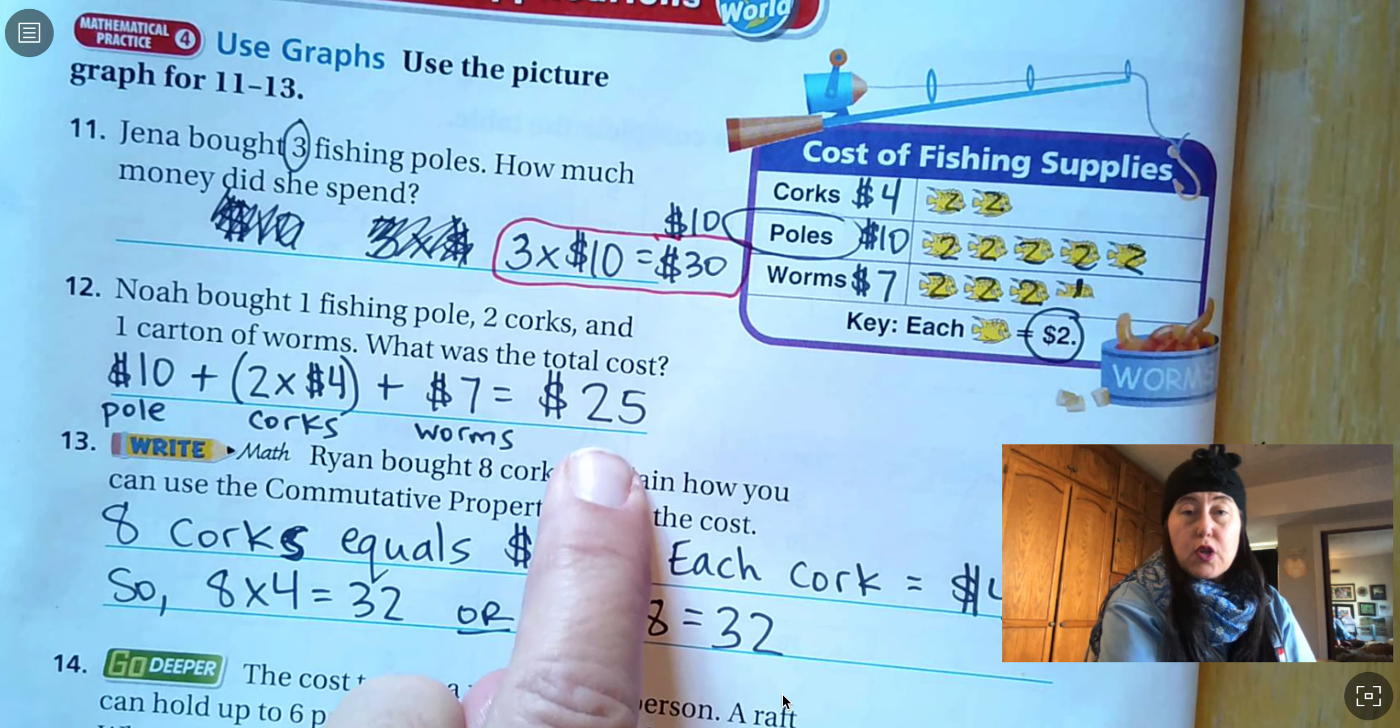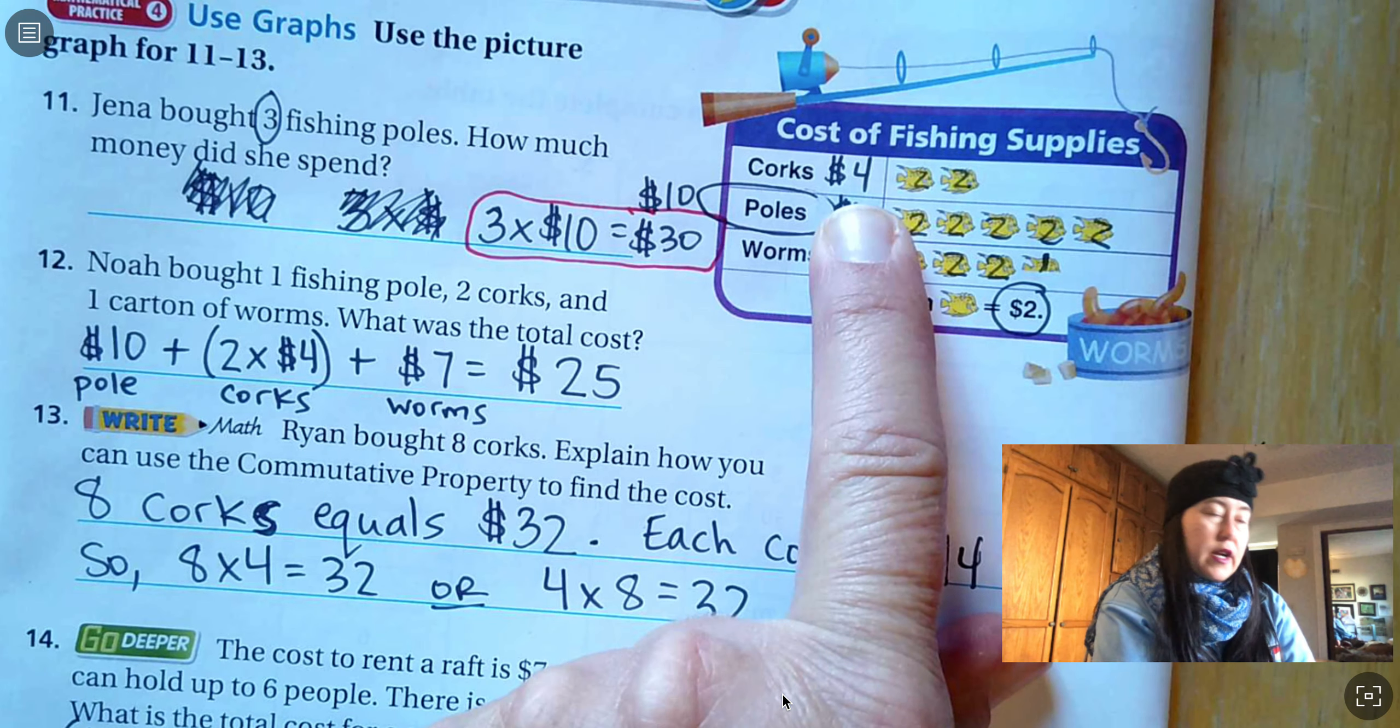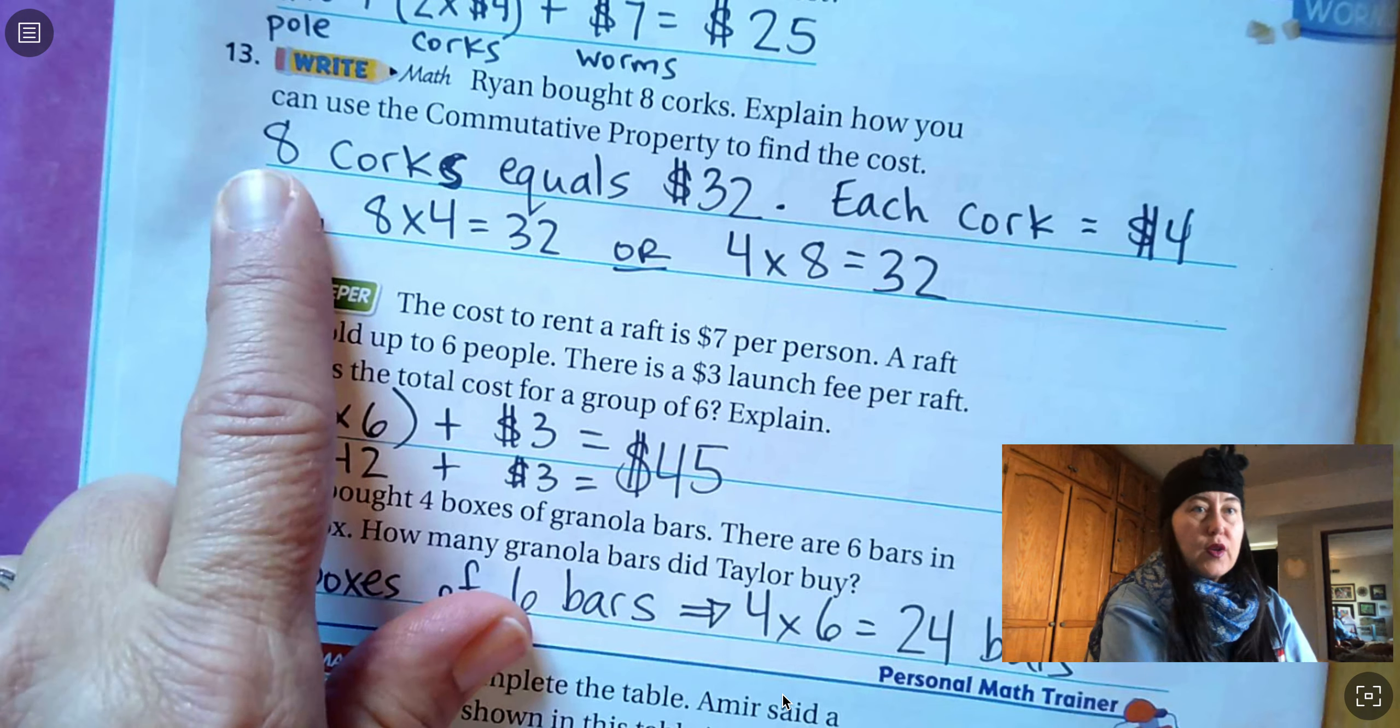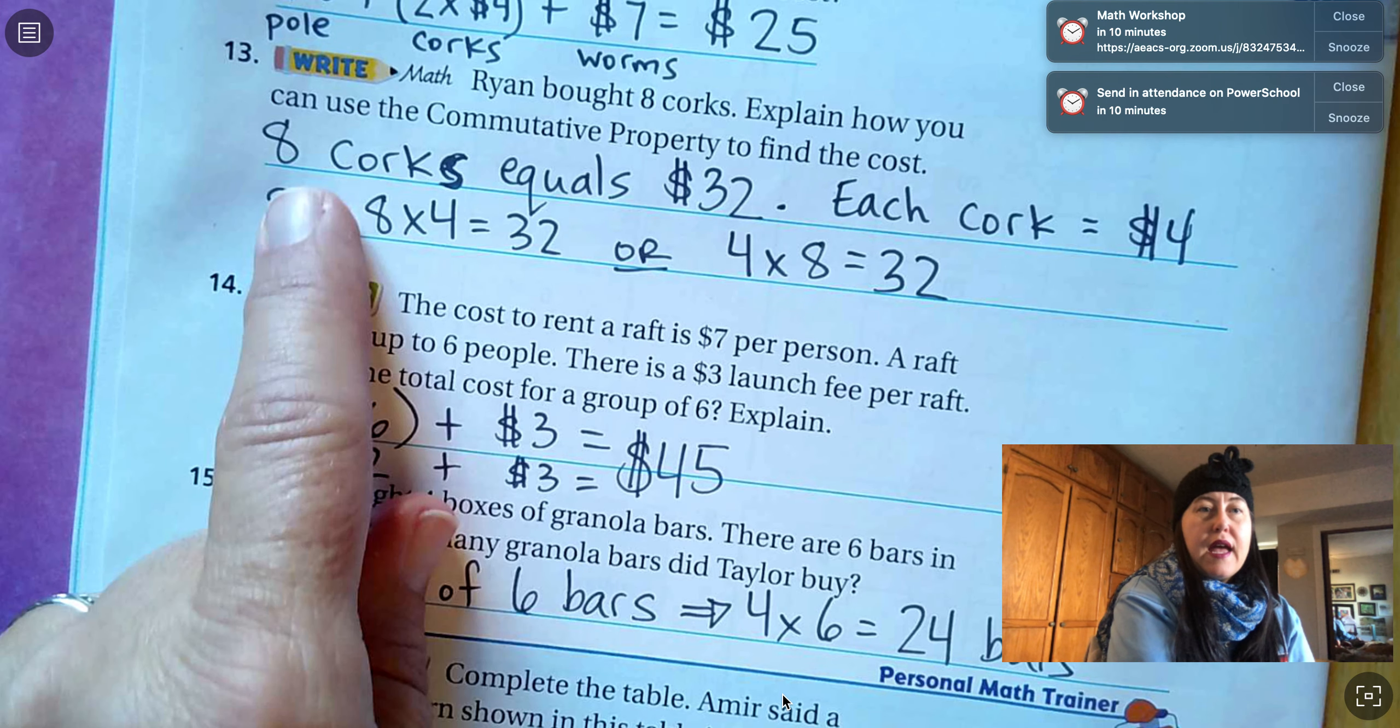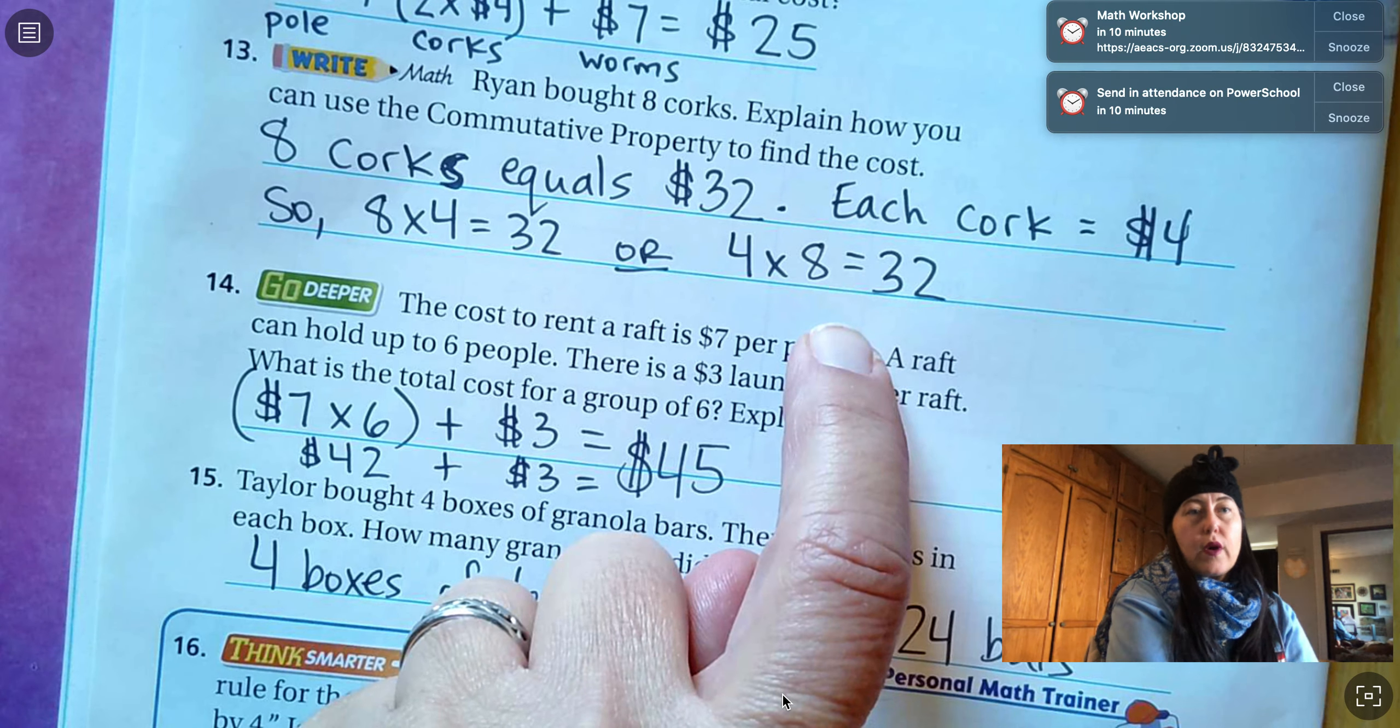Now we're going to do some writing. Ryan bought eight corks. Explain how you can use the commutative property to find the cost. So corks, one cork is four dollars. He bought eight. So eight corks equals thirty-two dollars. Each cork is four dollars. So eight times four equals thirty-two. Or four times eight equals thirty-two. You could think of eight corks at four dollars each or four dollars each for eight corks.